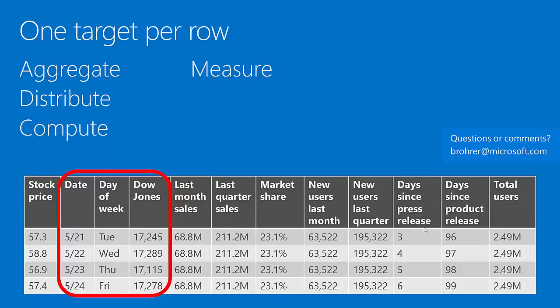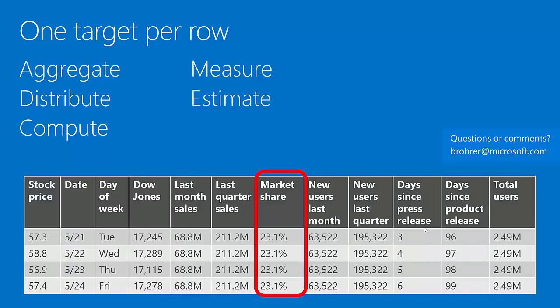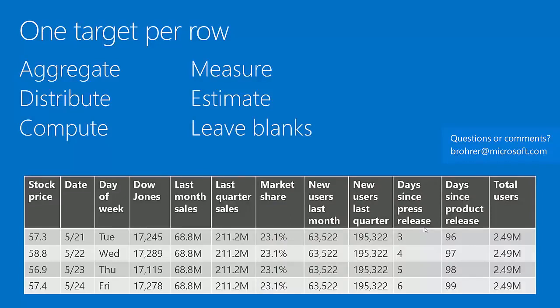Another thing we can do is estimate. Sometimes, at the time we create our table, we don't have the most recent data and can't calculate, distribute, or aggregate to get the number — so we may have to make some educated guesses. If we have a basis for making a guess, that's better than leaving it blank — we've still added some information. But when all else fails, we can leave blanks. We don't want to leave too many, because the more we leave, the trickier it gets to do quality data science, but there are ways to handle it.